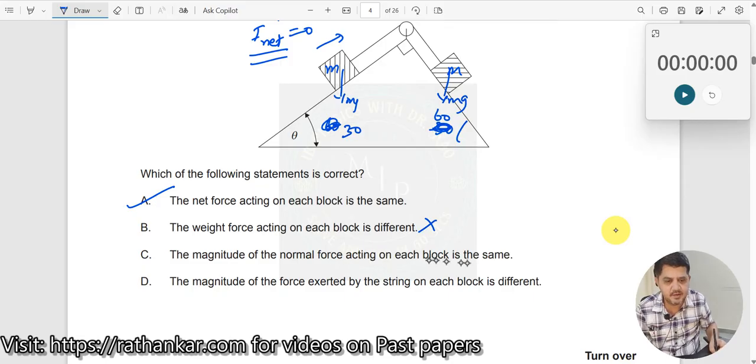Magnitude of normal force acting on each block is same. This is also incorrect. Reason why? Because here this is normal here. This is normal here. Now you see this is Mg cos. What is this now? This is theta. If this is theta over here, then let us say I take this as 30 over here because both the angles are not same. If I take the Mg cos, this will be Mg cos 30 over here and this will be Mg cos 60 over here. So definitely this is also incorrect.